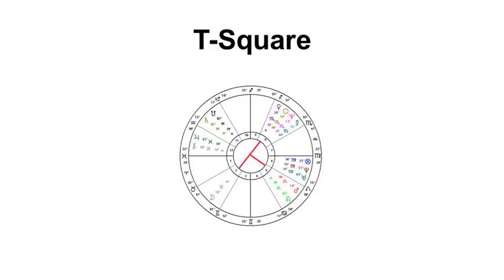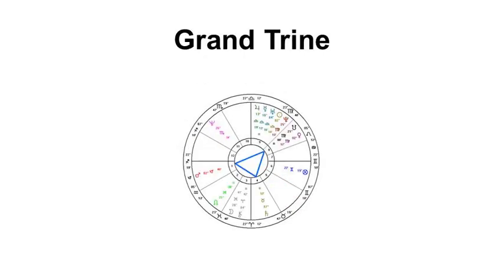Sometimes, aspects are made up of three or more planets. For example, a T-square is made up of two squares and an opposition. A grand trine occurs when three planets align in a perfect equilateral triangle, making 120-degree angles, that is trines, to each other.